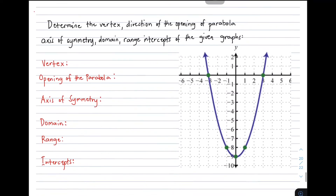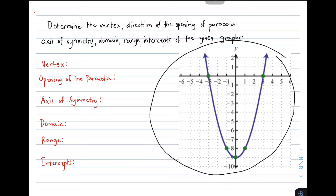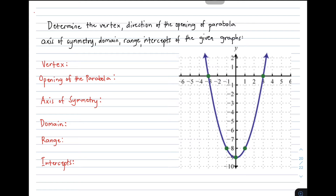Okay, so I have here a direction given: determine the vertex, direction of the opening of parabola, axis of symmetry, domain, range, and the intercepts of the given graphs. I have here on the right side a graph of a parabola. So our task right now is to identify the vertex, opening of parabola, axis of symmetry, domain, range, and intercepts.